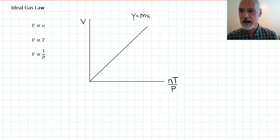So y will equal mx. Now, in this particular case, y is our volume. So y will equal the slope of this line times x. And in this case, x is this combination of variables, moles temperature over pressure, nT over P.